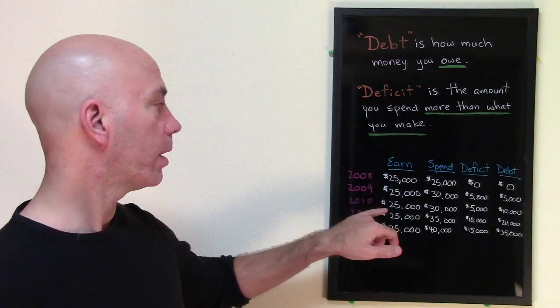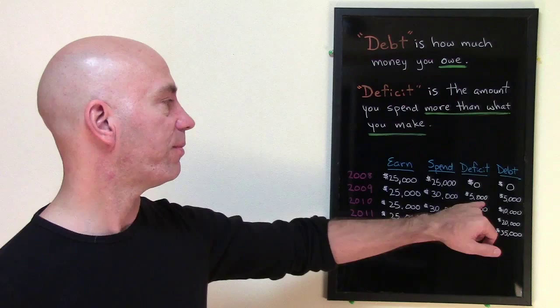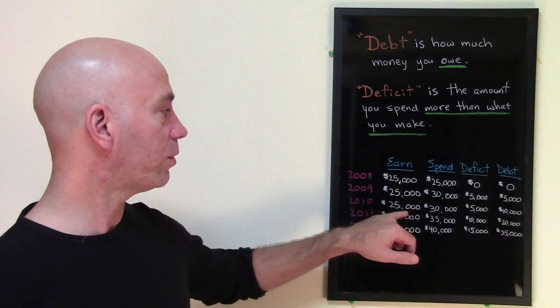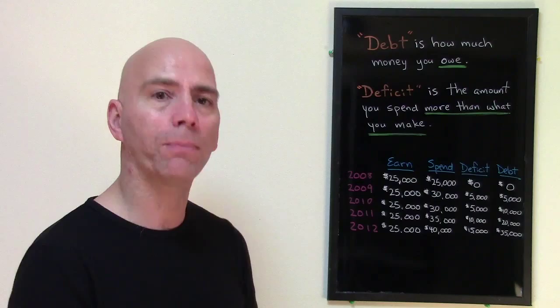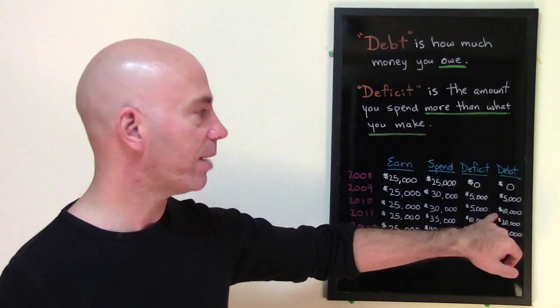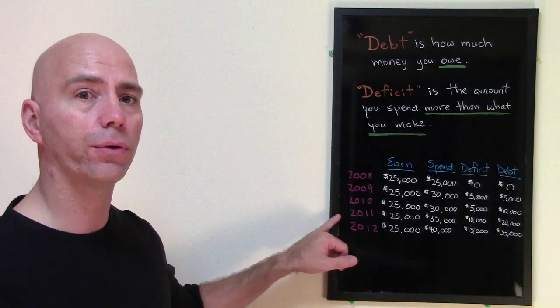Let's look at the third year, 2010. You made $25,000, and again you spent $30,000, so you have the same deficit — $5,000 — because you spent $30,000 but made $25,000. Your deficit is the same. For both years you've spent $5,000 more than what you made, so your deficit is the same, but your debt is now $10,000. You now owe $10,000 because you borrowed $5,000 twice.